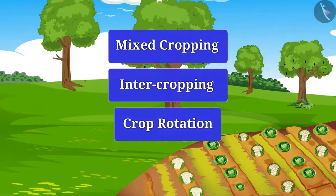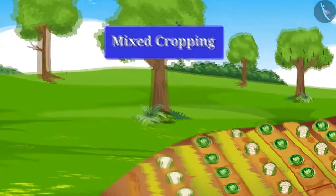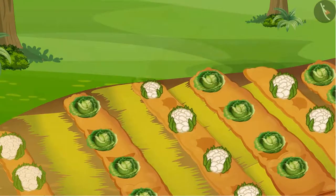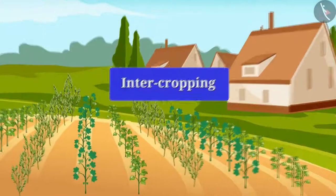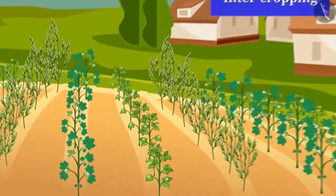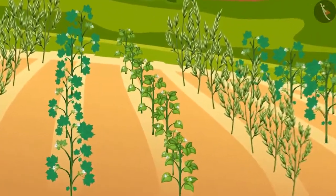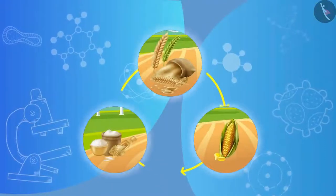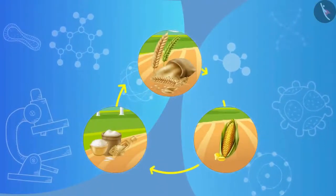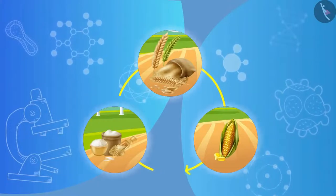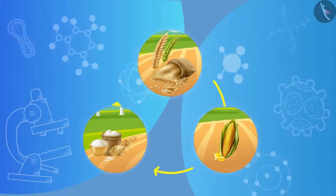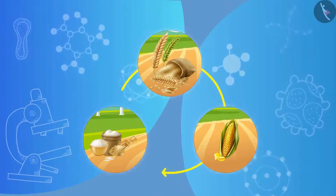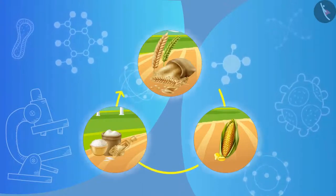Let us know about these methods in detail. Mixed cropping: in this method, different types of plants are grown in the same field. Intercropping: in this method, two or more crops are grown at the same time in a land in a certain row pattern. Crop rotation: in this method, different types of plants are grown in a cyclic manner on the same land. This is done so that the soil is not depleted of only one set of nutrients, and it increases crop production.